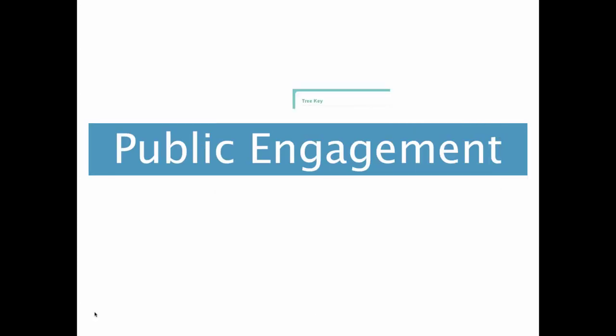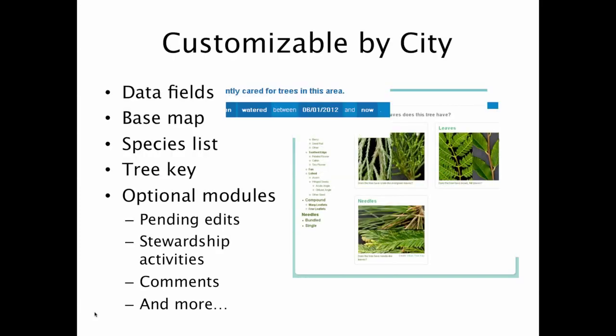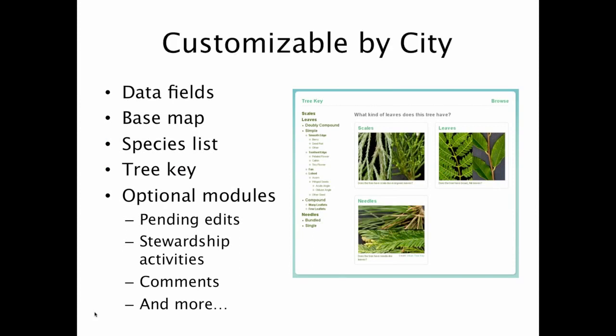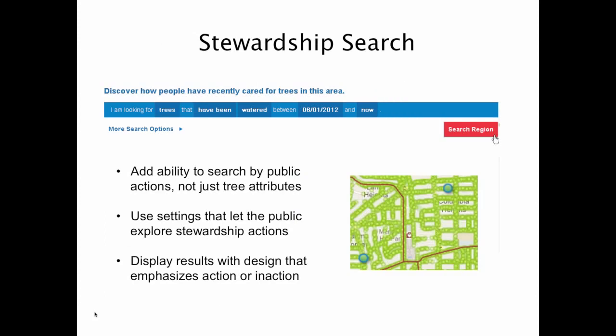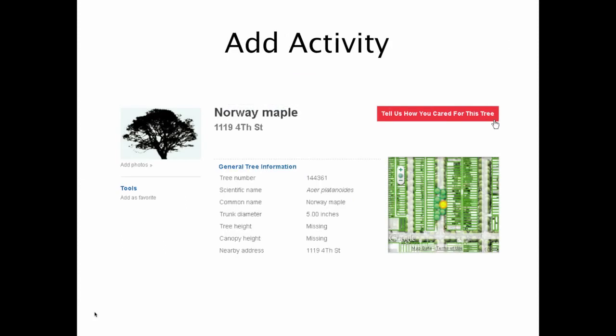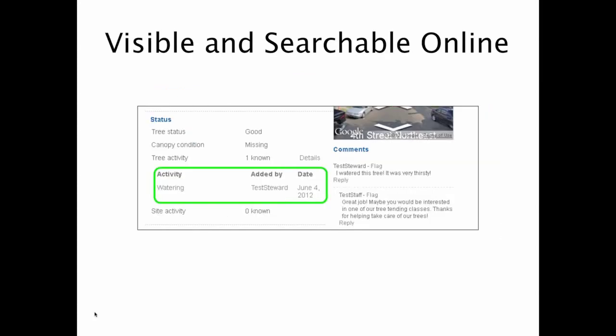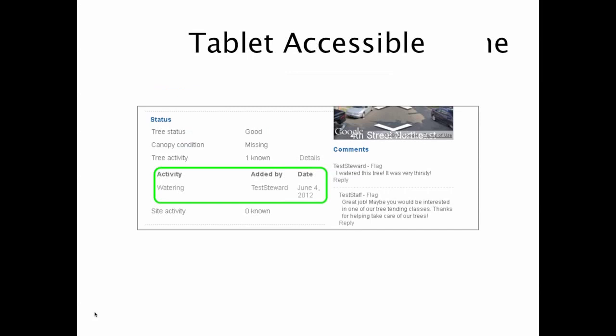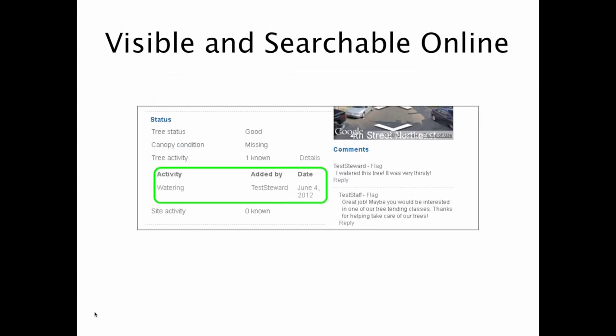What does this overall mean for public engagement? What's really exciting about OpenTreeMap is that it can be customized to an individual city — different data fields, a different base map, your own species list. You can add stewardship tracking and things like that. One of the really exciting things we've worked on is tracking stewardship. People would be able to show when they've watered a tree, and then you could search to see all trees that haven't been watered that are less than three inches in diameter and haven't been watered in the last three months. This becomes a really great tool for directing stewardship planning, and it would display stewardship activities as a way to engage with tree tenders or citizen foresters.